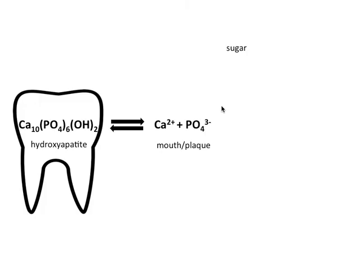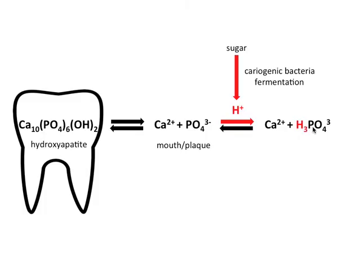Bacteria digest the sugar we consume for energy via glycolysis, and then go one step further to produce lactic acid via fermentation. This organic acid is secreted directly onto the tooth enamel and is the actual culprit. These hydrogen ions complex with free phosphate in the mouth to form phosphoric acid, which drives the reaction to the right due to Le Chatelier's principle — as we lose molecules on one side of the equation, the equilibrium seeks to restore that imbalance. This pulls calcium and phosphate out of the tooth, weakening it. And this is how sugar and bacteria cause decay in teeth.